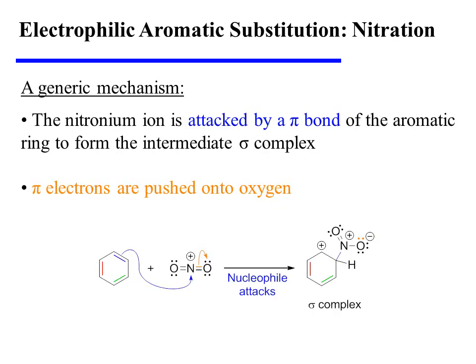The nitronium ion is electrophilic enough that it is able to coax the aromatic ring into reaction, and so attack of a pi bond on the nitrogen of the nitronium ion leads to the new carbon-nitrogen bond in the sigma complex. Notice that as nitrogen is attacked, that pi bonding pair of electrons is pushed back onto oxygen so as to maintain a consistent valence on the nitrogen.